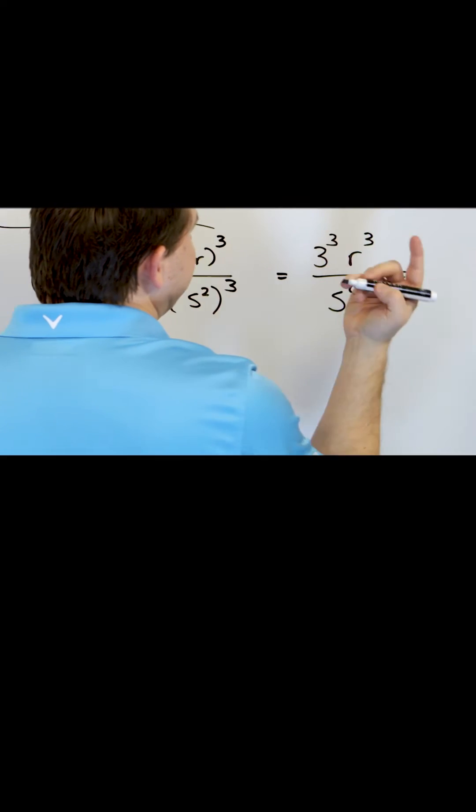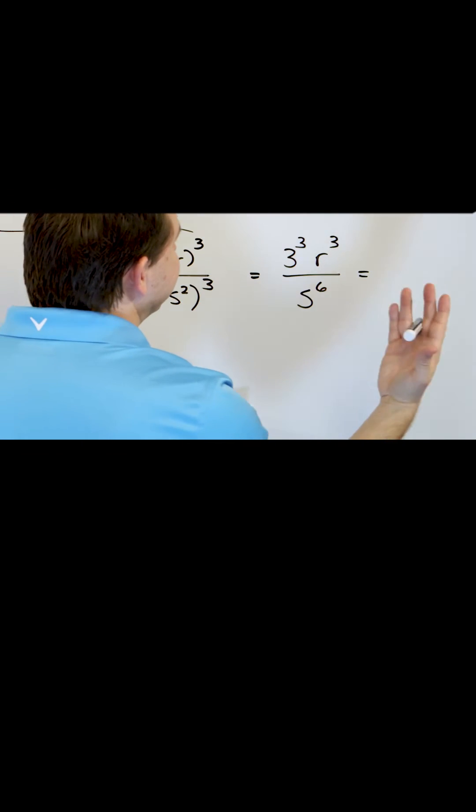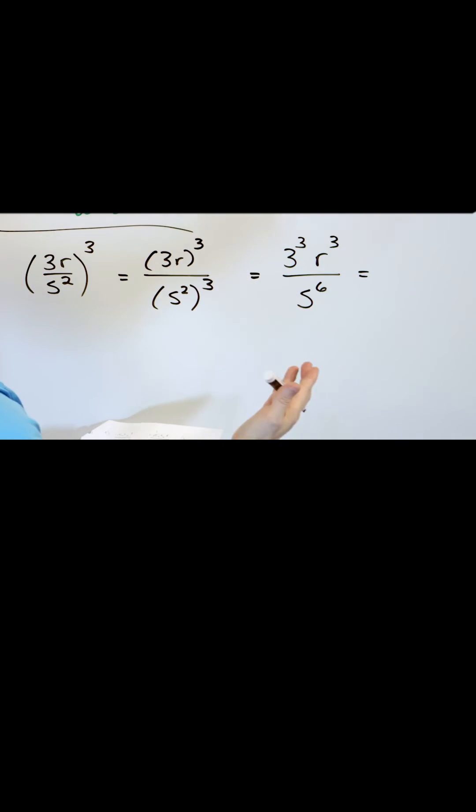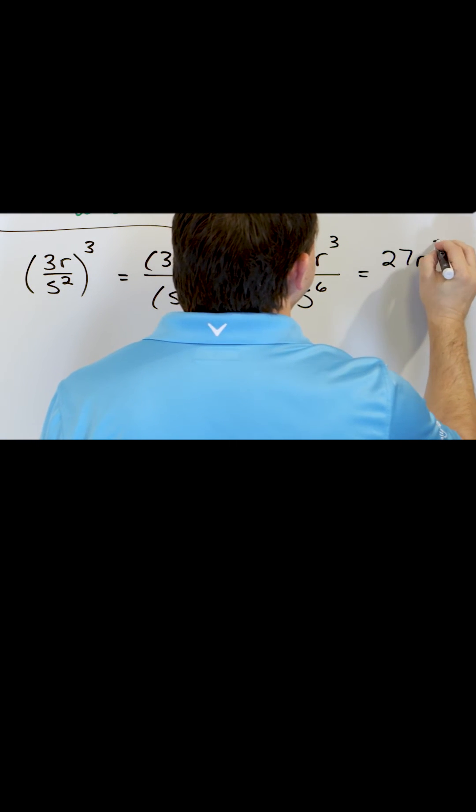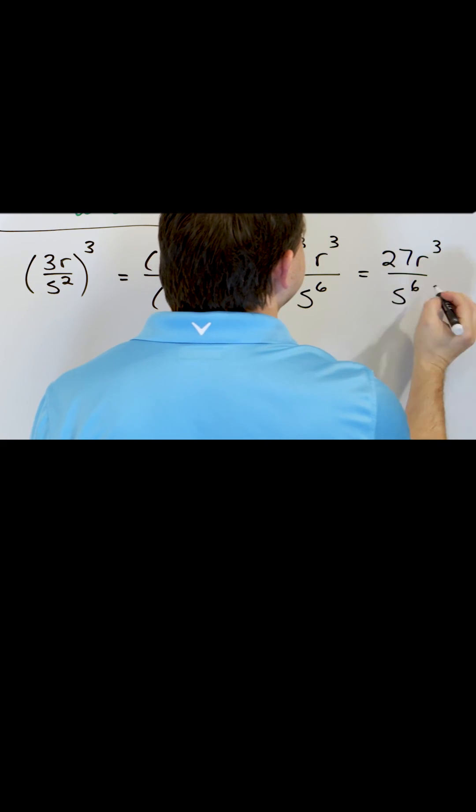And then finally, what is 3 to the third power? 3 times 3 times 3. So 3 times 3 is 9. 9 times 3 is 27. r cubed over s to the 6.